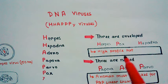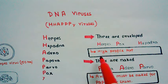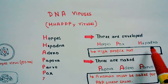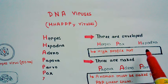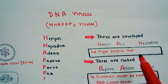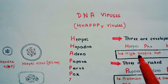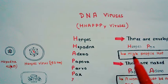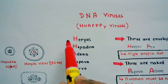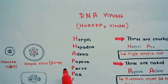Three viruses are enveloped: herpes, pox, and hepadna. We can remember these with the mnemonic 'high profile hat' — all three of these viruses wear a high profile hat, meaning they have an envelope.